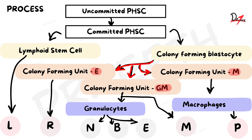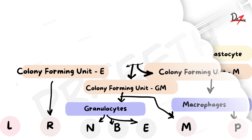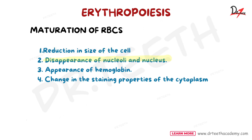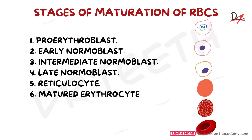Now we'll discuss the second part: how erythrocytes develop from the colony forming unit into mature erythrocytes. Four important changes occur in this process. First, there is reduction in the size of the cell — from a diameter of 25 down to 7.2 micrometers. Second, there is disappearance of nucleoli and nucleus, since erythrocytes are non-nucleated. Third, there is appearance of hemoglobin. Fourth, there is a change in the staining properties of the cytoplasm.